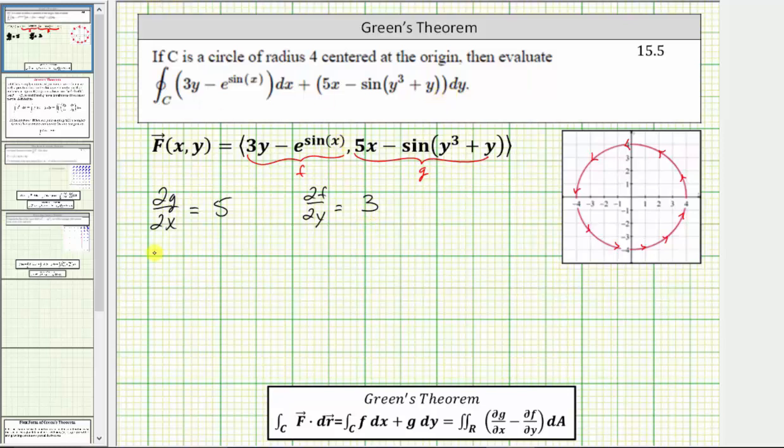Which means the given line integral is equal to the double integral over the region R of, notice how this difference is just five minus three, which is equal to two. Then we have differential A. And the region R is this region here. And because the region R is a circle, it will be easier to evaluate this using polar coordinates. When using polar coordinates, differential A is equal to r dr d theta, which means this is equal to the double integral of 2r dr d theta.